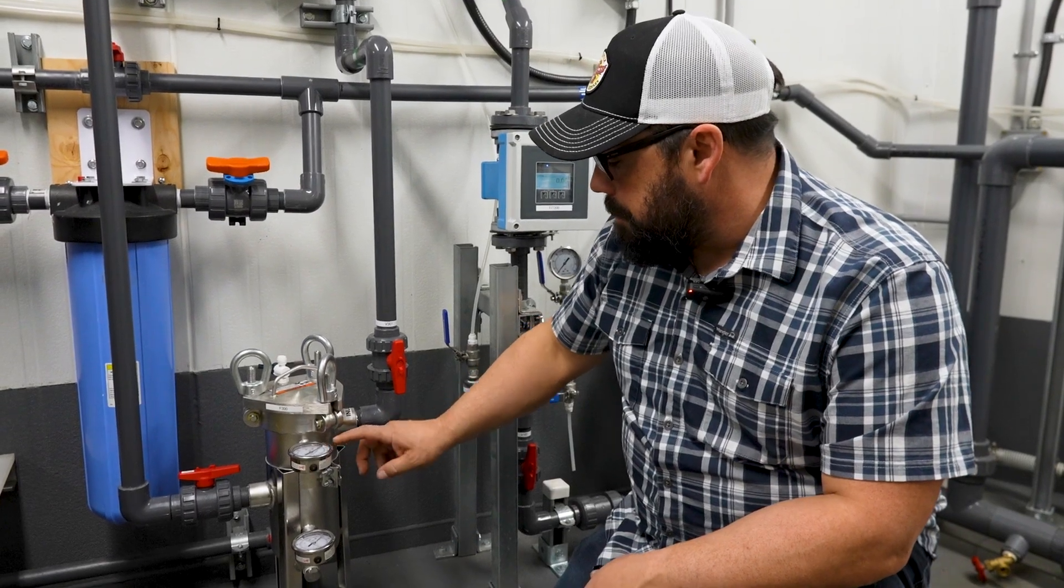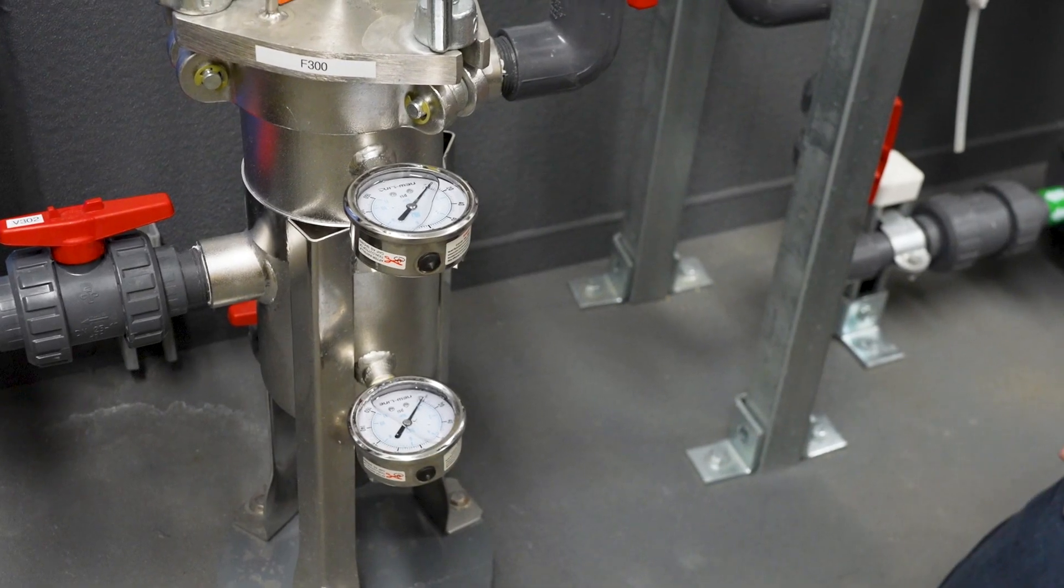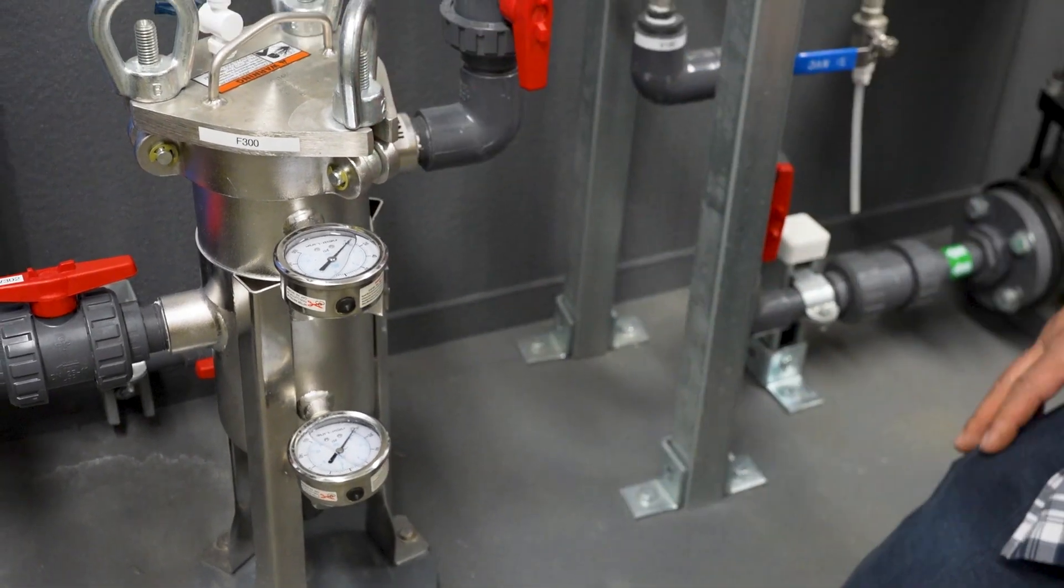They have gauges on them. This is your inlet gauge of pressure. This is your outlet pressure and you do the monitoring between 10 to 15 psi. You'll know it's time to change your bag.